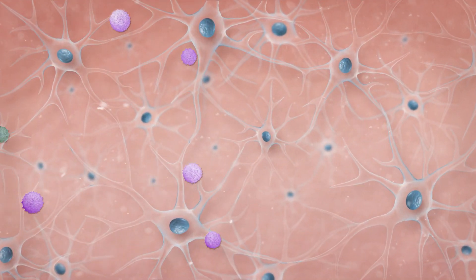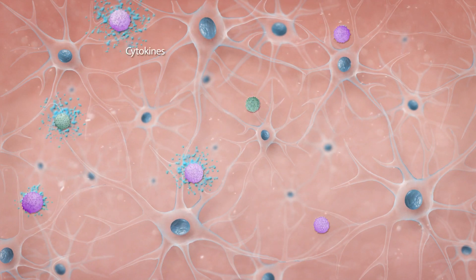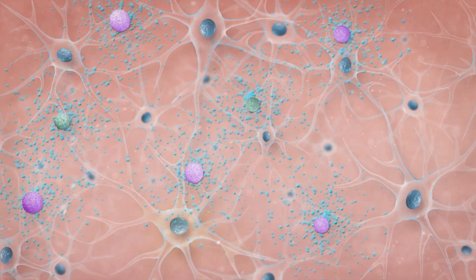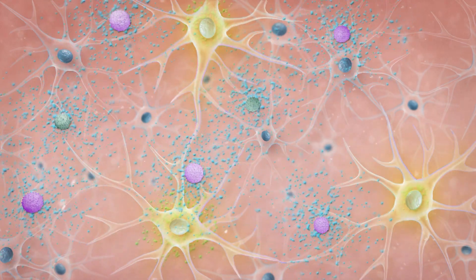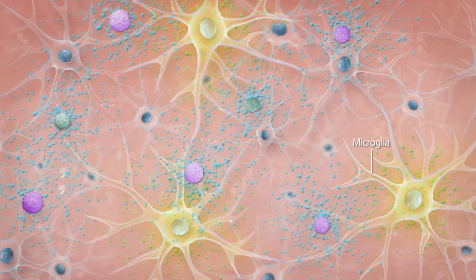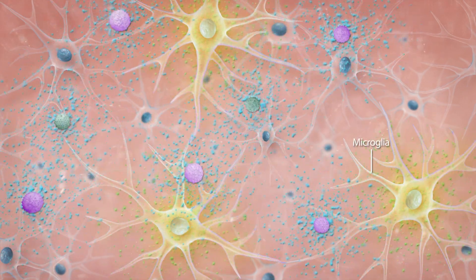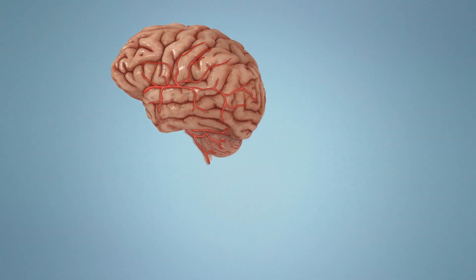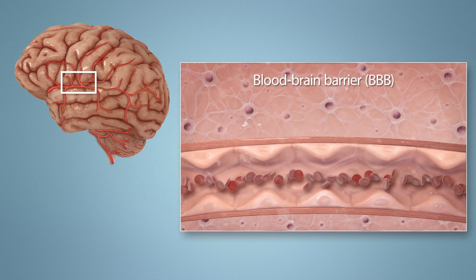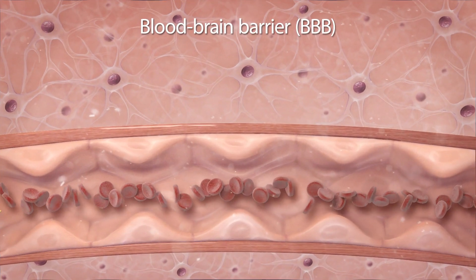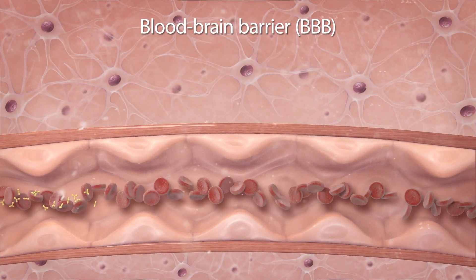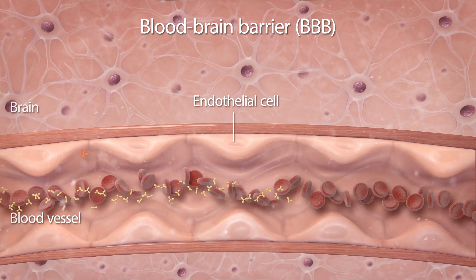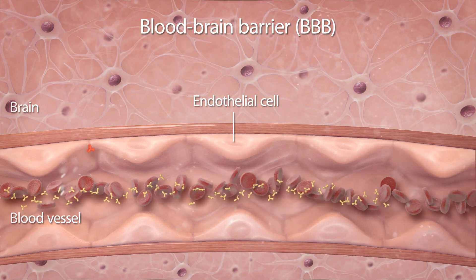Once there, Th17 cells release inflammatory cytokines, which are proteins that are important for immune cell communication. These cytokines then stimulate specialized immune cells of the CNS, called microglia, to release their own inflammatory cytokines. Next, cytokines released by both Th17 lymphocytes and microglial cells trigger the breakdown of the blood-brain barrier, or BBB. The BBB is a highly selective semipermeable boundary of specialized cells, known as endothelial cells, that line the blood vessels of the brain and prevent molecules in the circulating blood from indiscriminately entering the brain.